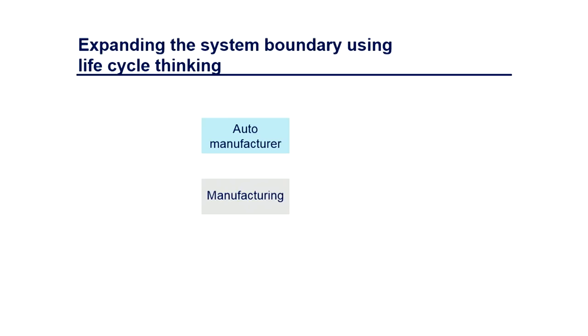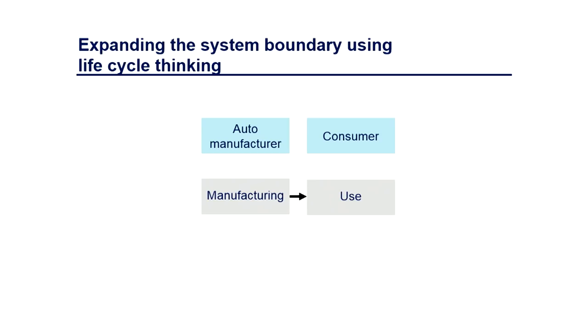To answer that question properly, we need to expand the system boundary using lifecycle thinking. If you were an auto manufacturer, your default way of thinking may be to focus on manufacturing — what is within your factory walls, how can you improve production processes, reduce energy consumption and waste within the factory. Those are valid aspirational goals. But lifecycle thinking and lifecycle assessment makes us go beyond those factory walls. There are questions that need to be asked outside of the auto manufacturer's purview — for example, the consumer: what are they going to do, how are they going to use this vehicle, how much will they drive it, and where will they plug it in?